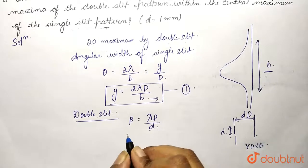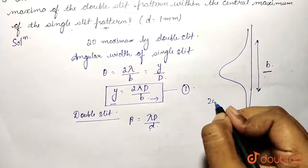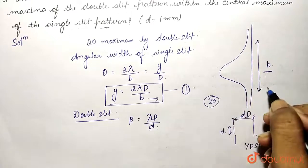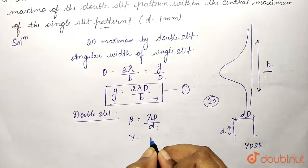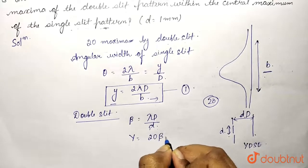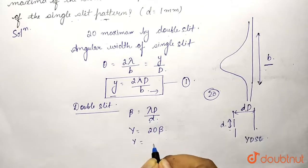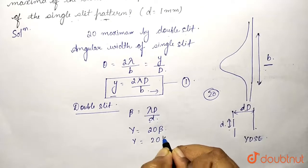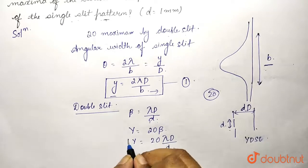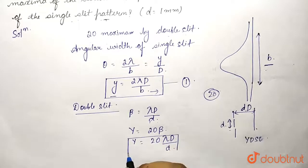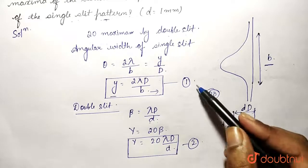So here we need to obtain 20 maxima within the breadth of the single slit pattern. We can write y = 20β. We know β = λD/d. So y = 20λD/d. Let this be equation number two.